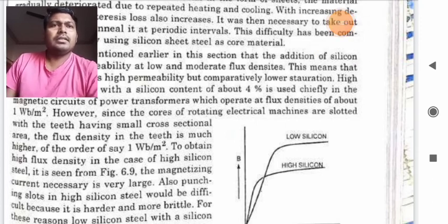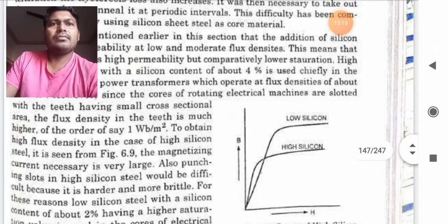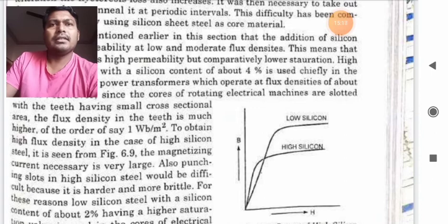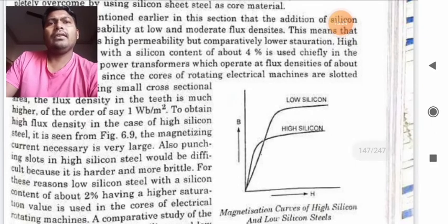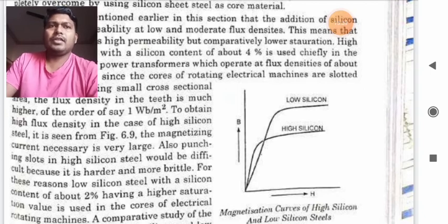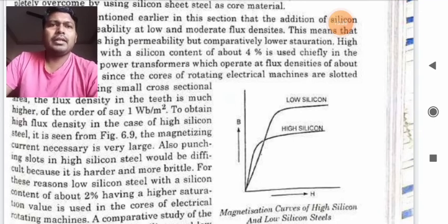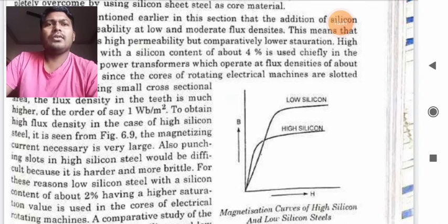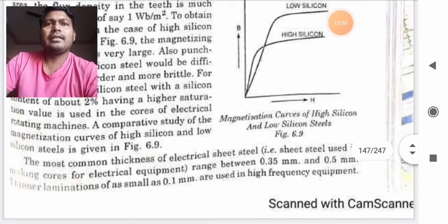However, since the cores of rotating electrical machines are slotted with the teeth having small cross section area, the flux density in the teeth is much higher. To obtain high flux density in the case of silicon steel, the magnetizing current necessary is very large. Also, punching slot in high silicon steel would be difficult because it is harder and more brittle. For these reasons, low silicon steel with a silicon content of about 2% having higher saturation value is used in a core of electrical rotating machines.